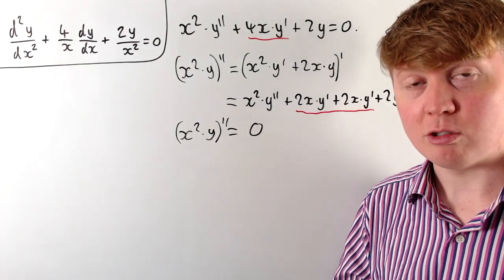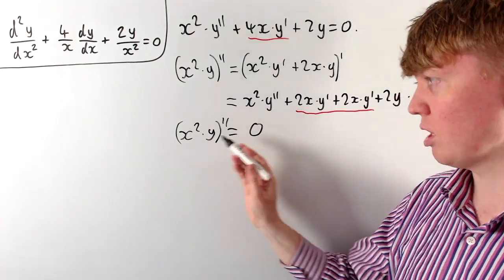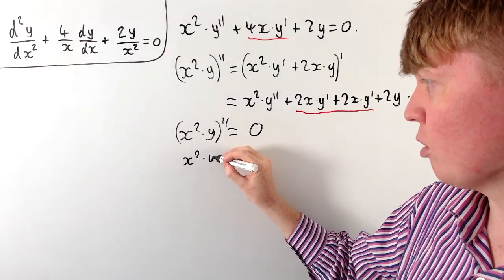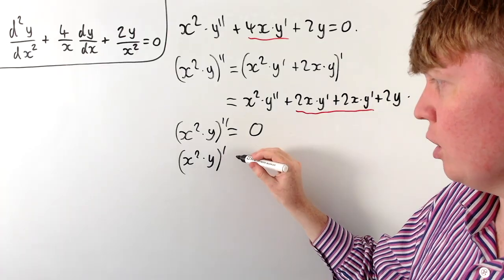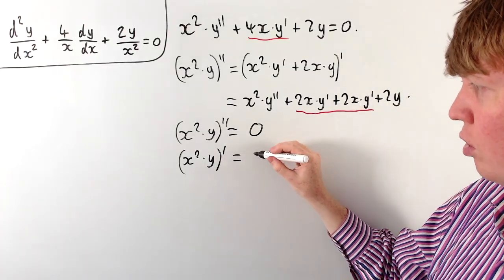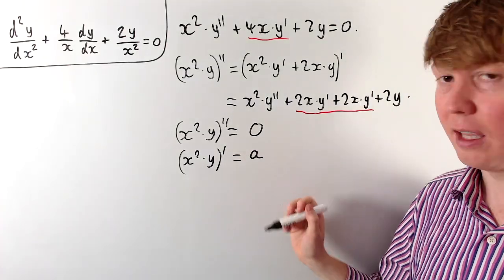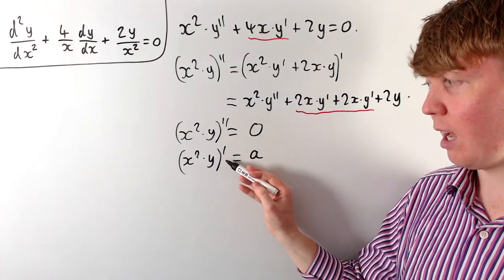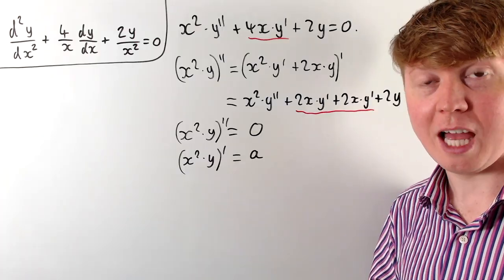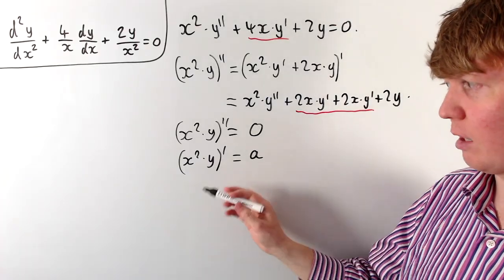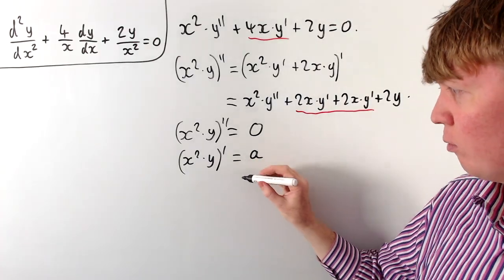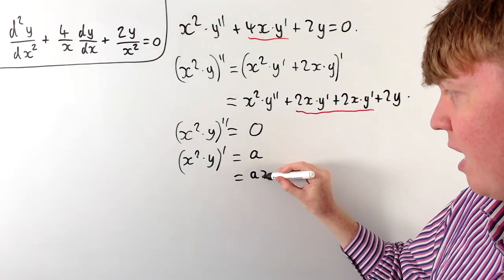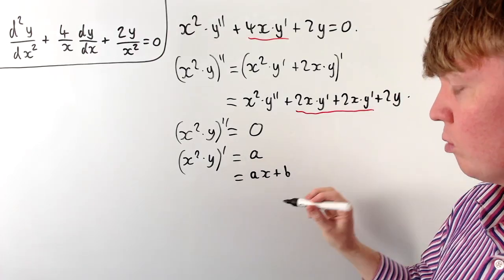This allows us to solve the differential equation — we can just integrate both sides. Integrating once, the first derivative of x squared times y equals some constant a. Any constant from integrating the left-hand side is absorbed into a on the right, so we don't need an extra plus c. Integrating again on the right gives ax plus another constant b.